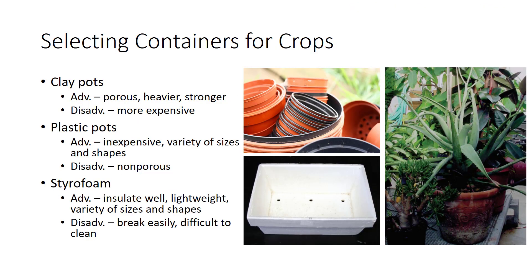In addition to optimal environmental conditions in the greenhouse, it is important to select a container that will promote maximal growth. Both advantages and disadvantages are associated with the different types of available containers. The three main materials used to produce pots are clay, plastic, and styrofoam. In the past, clay was the most popular. Clay pots are porous, which enables water to evaporate from the pot to avoid waterlogging. Clay pots are also heavier, stronger, and can support large plants without falling over.